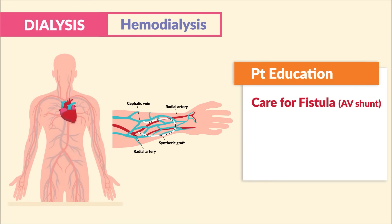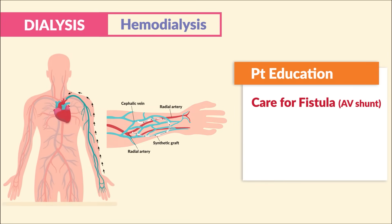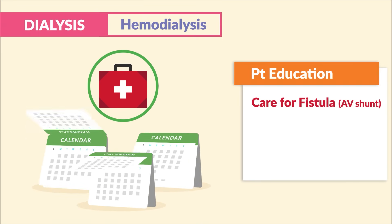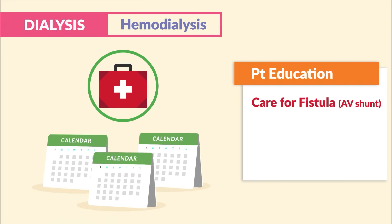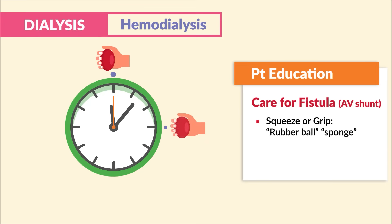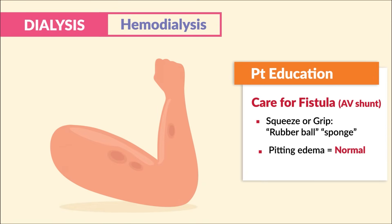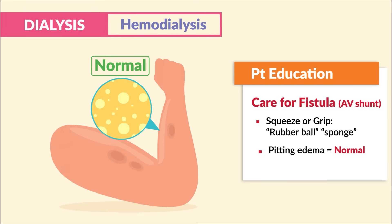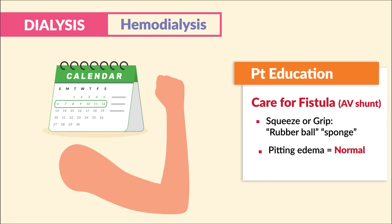Veins are typically not used to high pressures, since veins vacuum blood back to the heart. So it takes a few months to heal and settle in. Key terms to write down: squeeze or grip a rubber ball or a sponge a few times a day to help both blood flow and strengthen the new site. Pitting edema is normal — big test tip, most students get this wrong. Edema, that fluid buildup in the arm, typically resolves on its own within a week or so as the body adjusts.